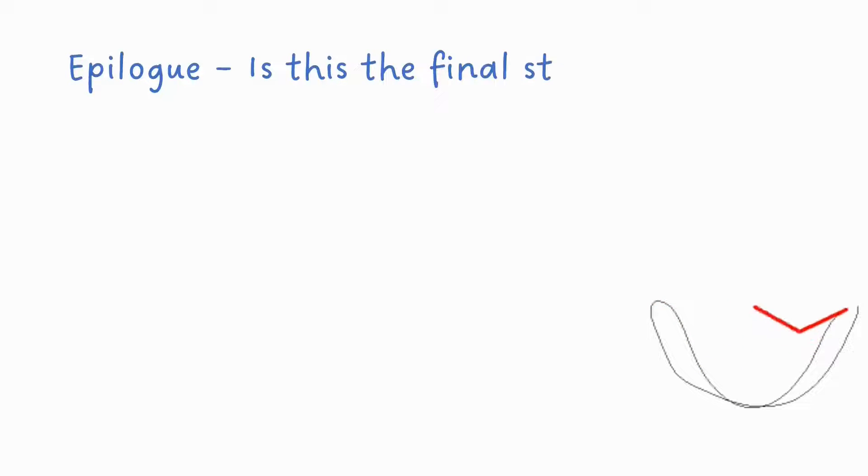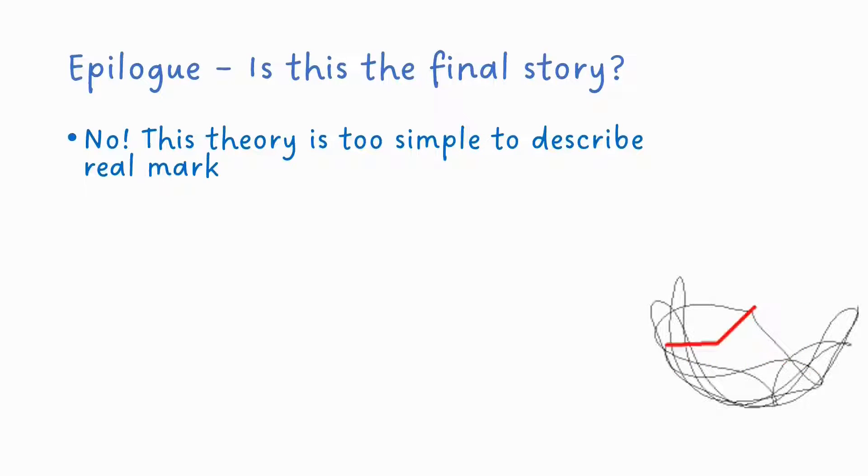So is that the end of this story? Well, no. Chaos theory is far too simple to describe real markets. The kind of dynamics that we're talking about here are the result of quite simple systems, which are controlled by only quite a small number of variables.